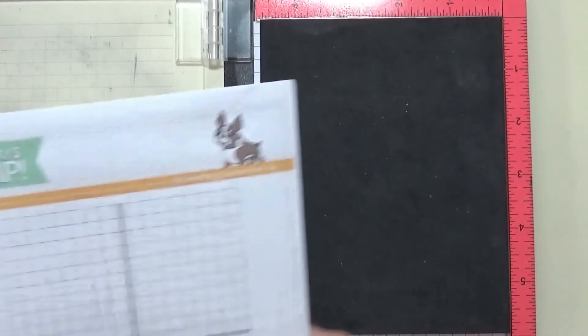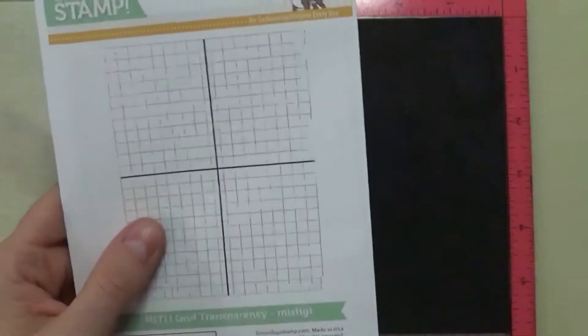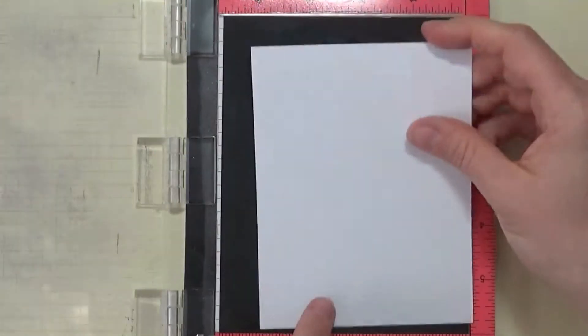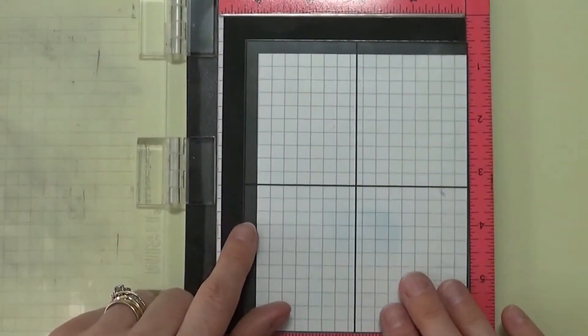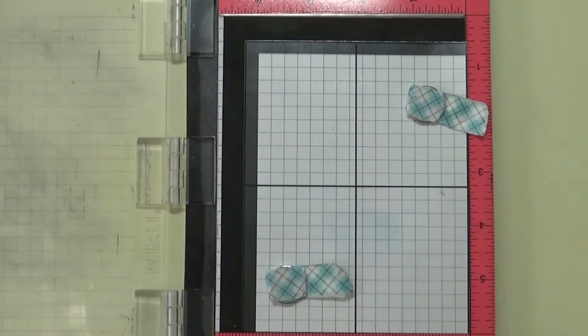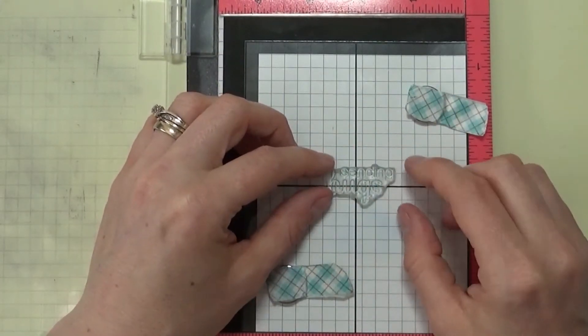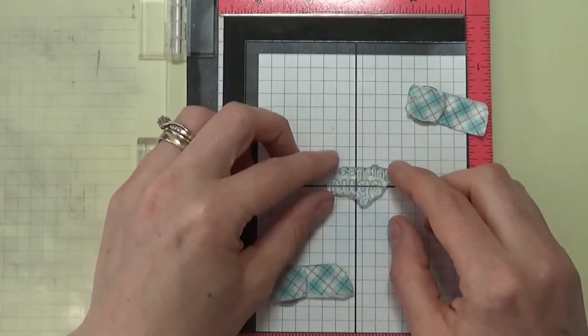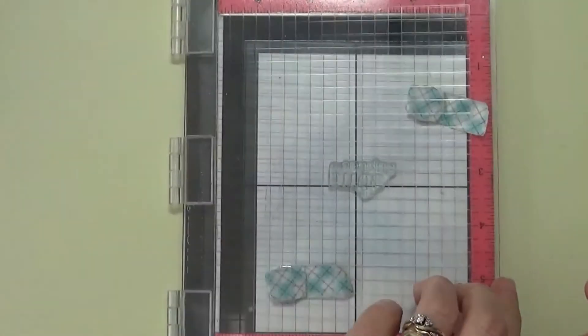A really cool tool that Simon Says Stamp has made is this MISTI grid transparency. And at first I was like, well what can you do with that? And then as soon as I saw a couple people demonstrating it I'm like, okay, I need to have this. So I'm going to stamp something now to show you how this transparency works. And you can just put it inside on top of your paper and add the magnets here. And now if I want this sentiment right in the middle, I can use the grid marks on this transparency to be able to help me line this up.